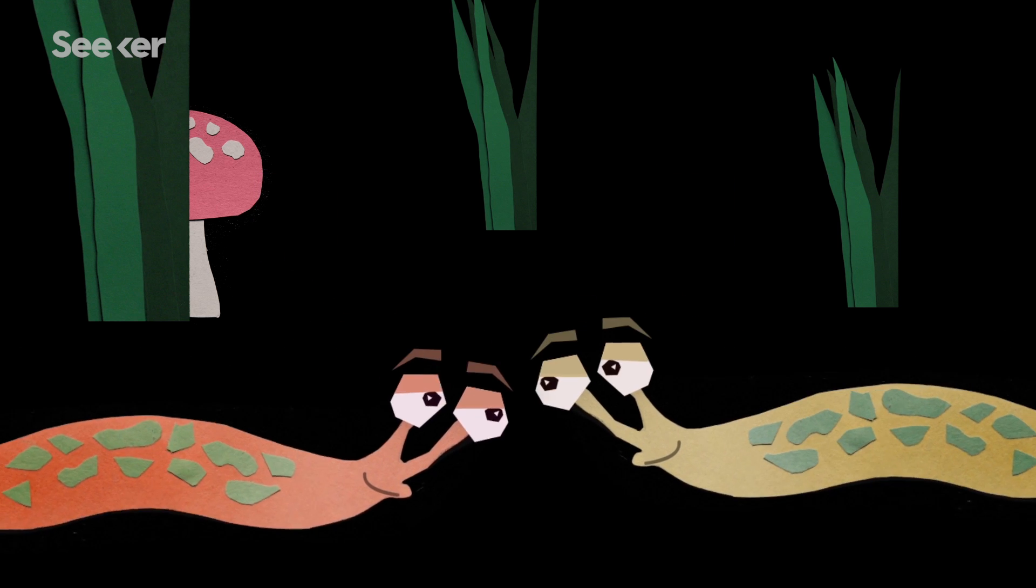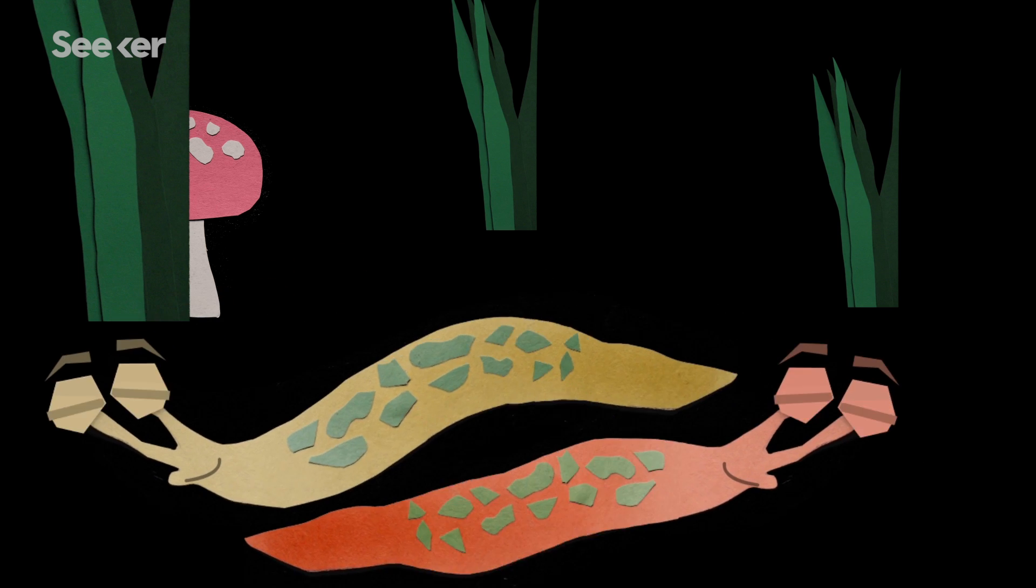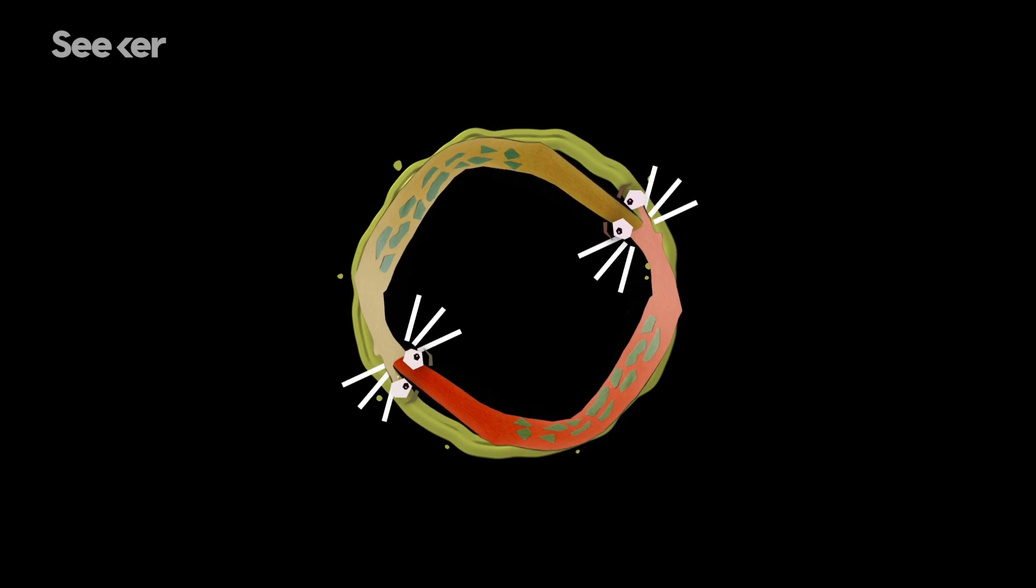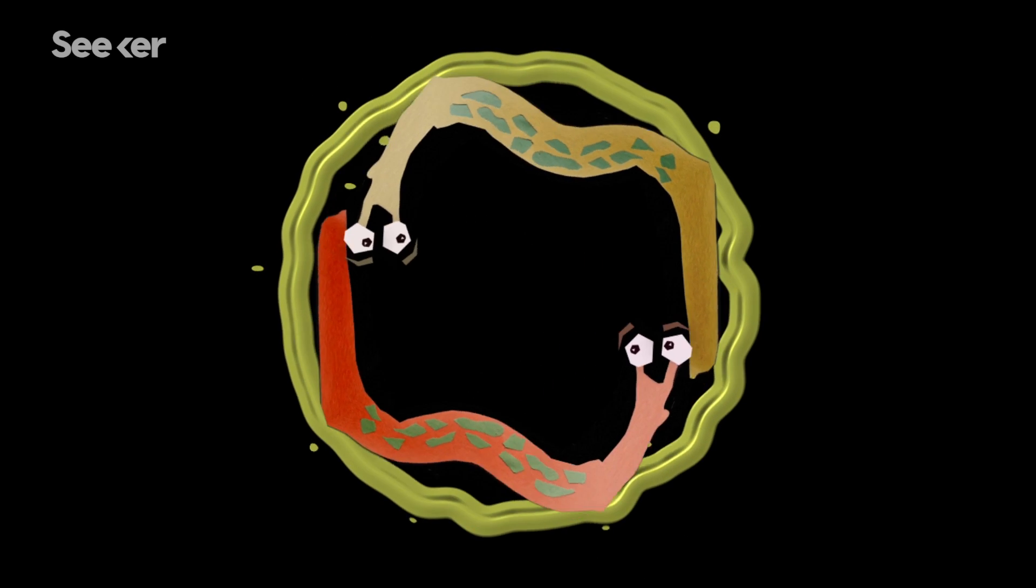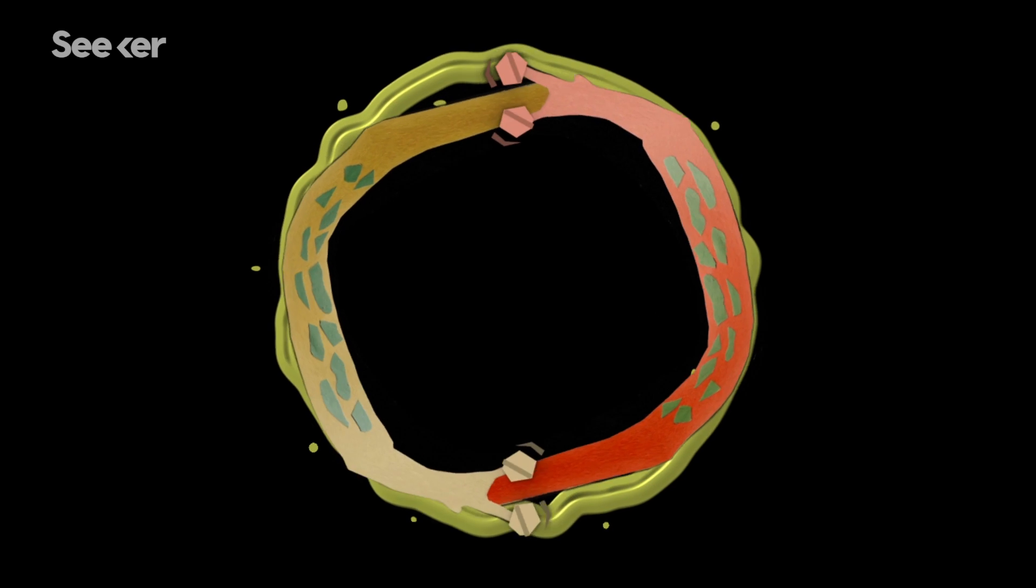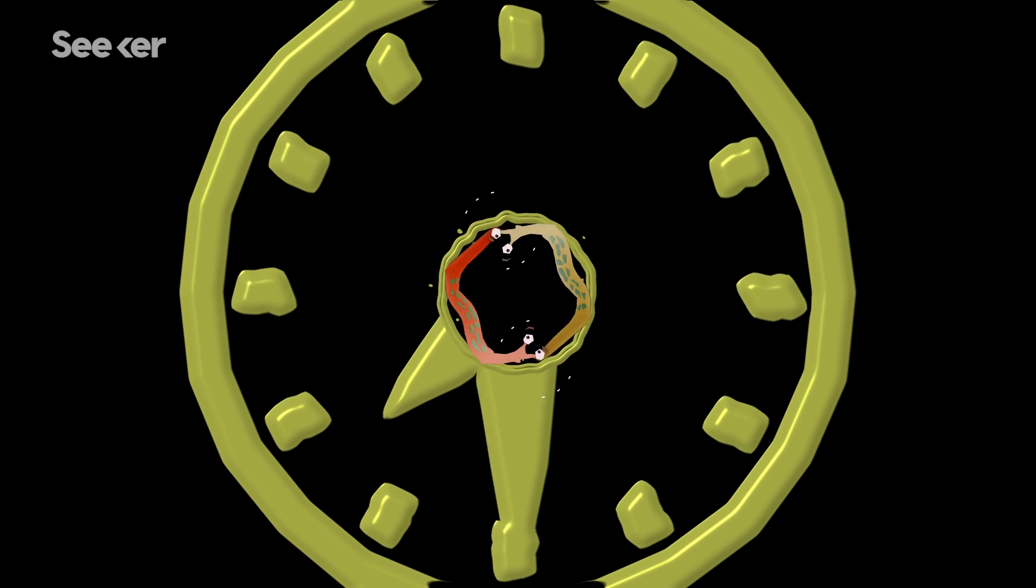So they began to engage in a splendid rendition of the pre-copulatory ebbs and flows of movement and gyration that leopard slugs are well known for. They lick and nibble one another as they dance around a very slimy circle. For slugs, foreplay is a big part of the courting process, and it can last for hours.